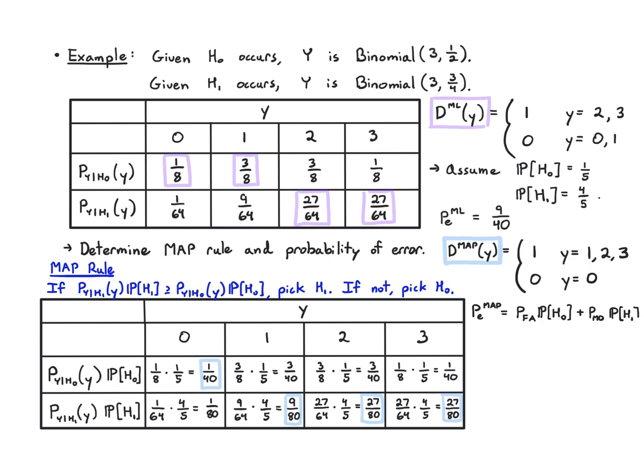I'm going to weight the probabilities of false alarm and misdetection by the hypothesis probabilities to get them. I'm just going to add up all of the conditional probability values given H₀ over the range of A₁. So it's going to be this value plus the value at 2 plus the value at 3.